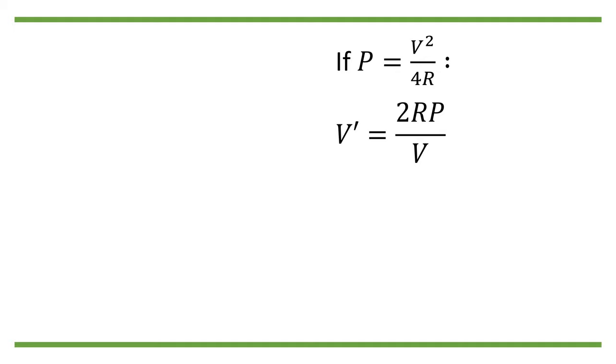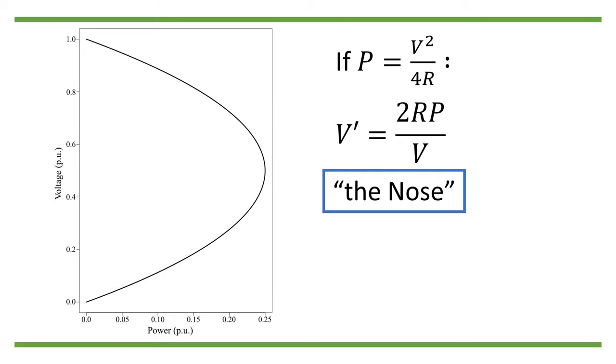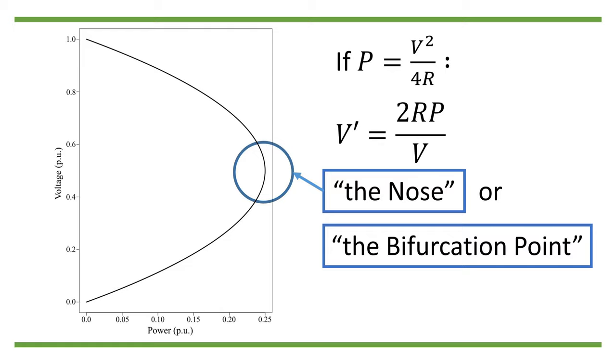We sometimes call this point the nose of the solution curve. Draw the possible solutions V prime as a function of P, and you can see why it is being called that way. Although, more formally, we should call it the bifurcation point.